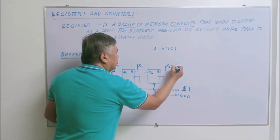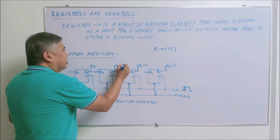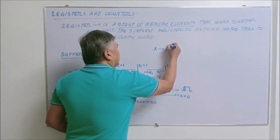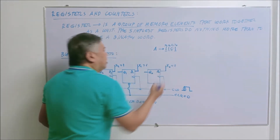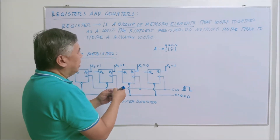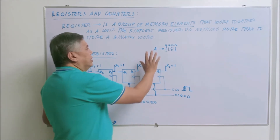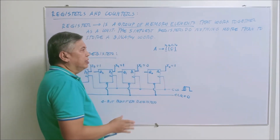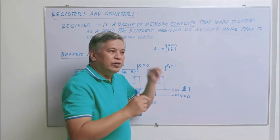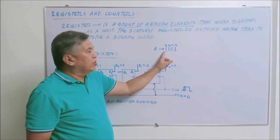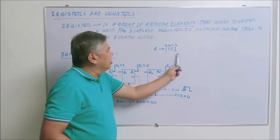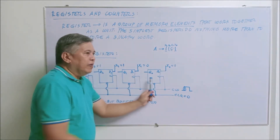So X0, X1, X2, and X3 carry the ASCII binary code. When you press a character on your keyboard, it is converted into its binary form — in this case, 1101 — and that will be transmitted to your X inputs. How do we store this value, or letter A, into our flip-flops or register?